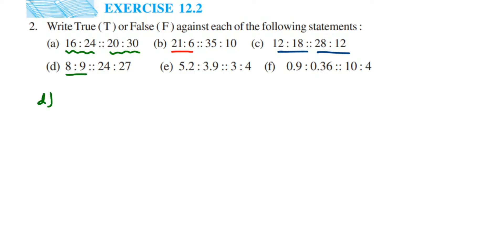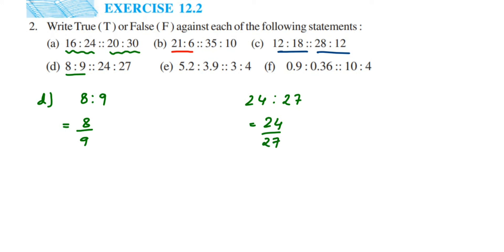Fourth question: first ratio is 8 is to 9 and second ratio is 24 is to 27. Converting 8 by 9 — both numbers don't go in the same table, so it cannot be cancelled. For 24 by 27 — cancel in the three table: three eights are 24, three nines are 27 — gives 8 by 9. Both ratios are 8 by 9, so they are equal. The answer is TRUE — they are in proportion.